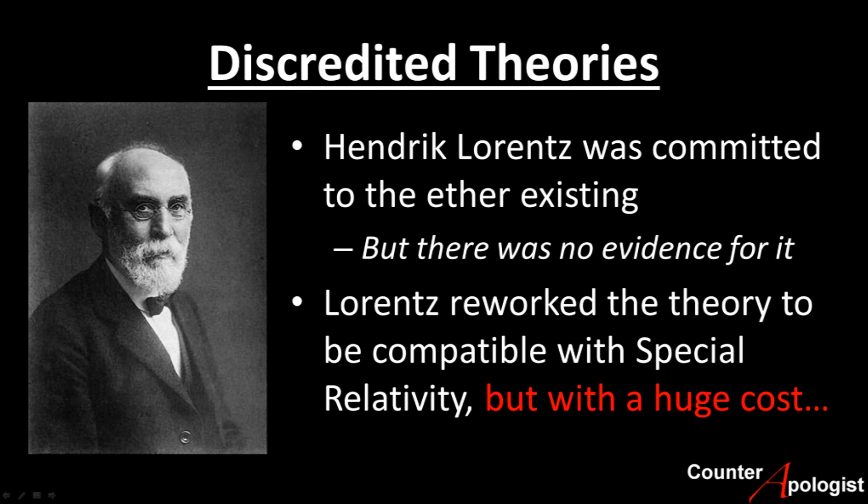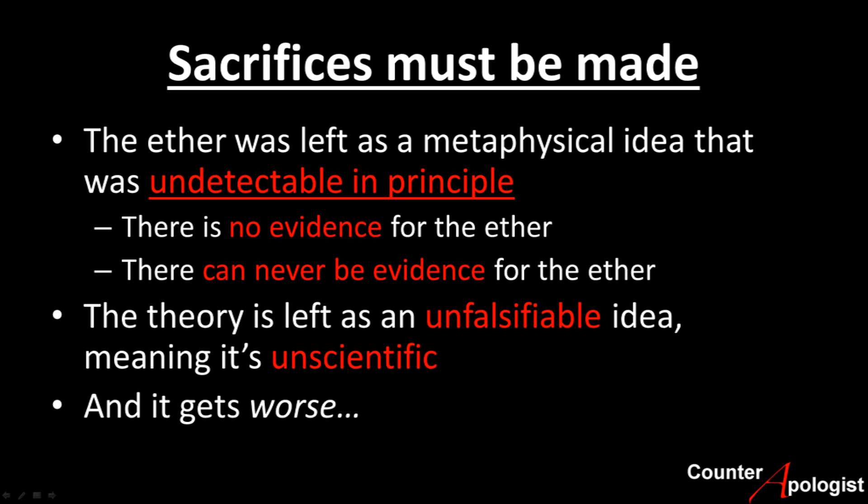The scientist Hendrik Lorentz was a contemporary of Einstein and was committed to the idea of the motionless ether. He rejected the idea of space-time as a manifold and the idea that the ether did not exist. The problem for him was that special relativity works and actually has a wealth of evidence to back it up. So Lorentz reworked his theory, eventually making it mathematically equivalent to Einstein's special relativity. But in order to do this, he had to leave the ether as a metaphysical idea that was undetectable in principle. This means that not only is there no evidence for a privileged reference frame, we can never have evidence for it, leaving the theory unfalsifiable and hence unscientific.